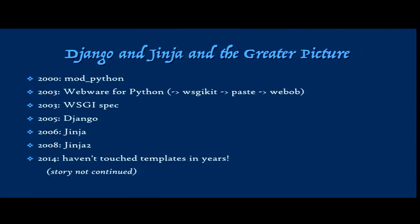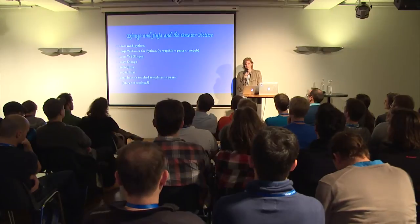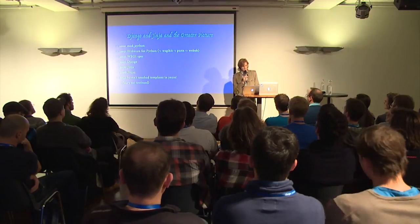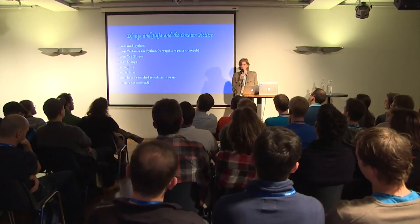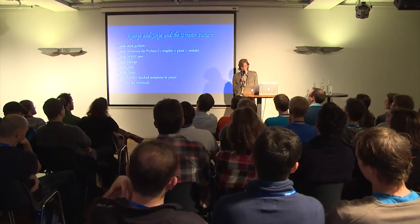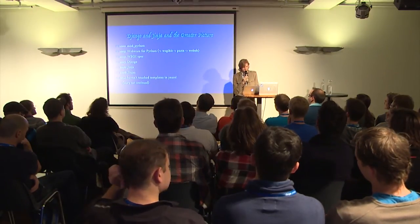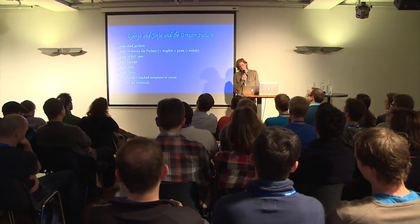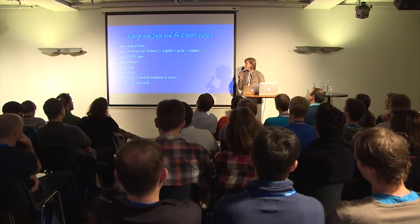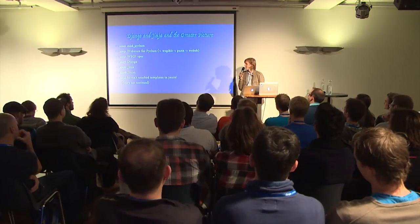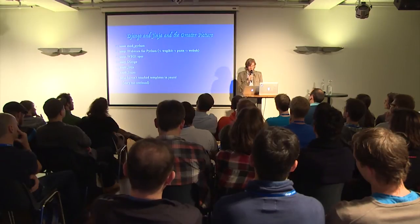In 2003 we got the WSGI spec, and then in 2005 there was Django. Django was the first framework for Python which had a reasonable template engine. In fact, it was such a good template engine that lots of people cloned it, including Jinja1, which was quite literally just the Django template engine without Django.